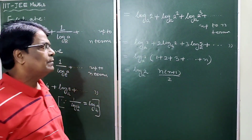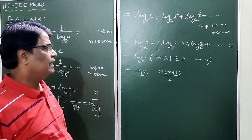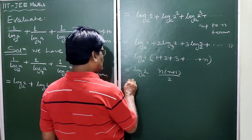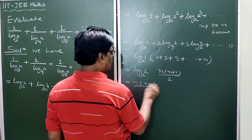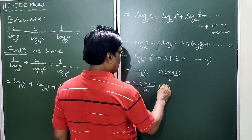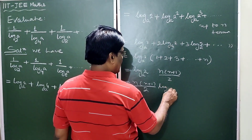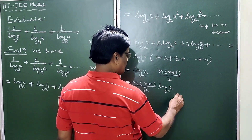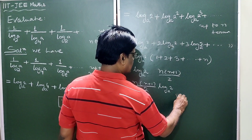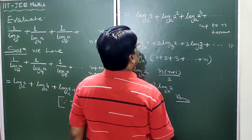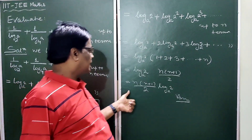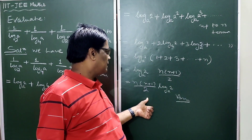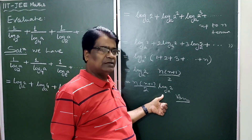Since 1 plus 2 plus 3 up to N equals N into N plus 1 by 2, the final result is N into N plus 1 by 2, multiplied by log base a of 2. So the sum of the series is N(N+1)/2 times log base a of 2.